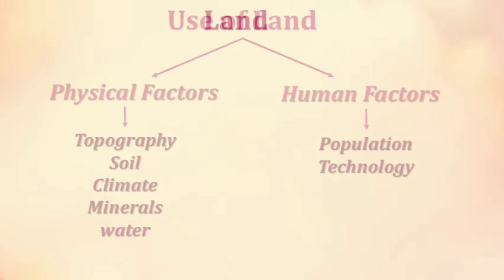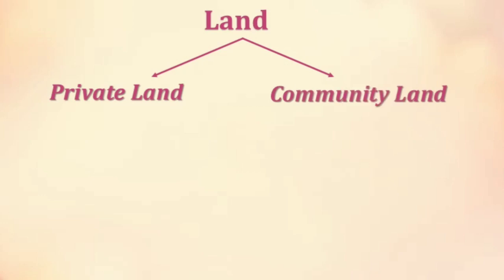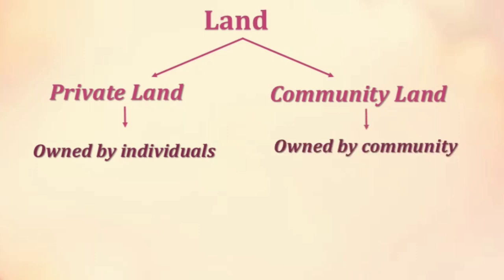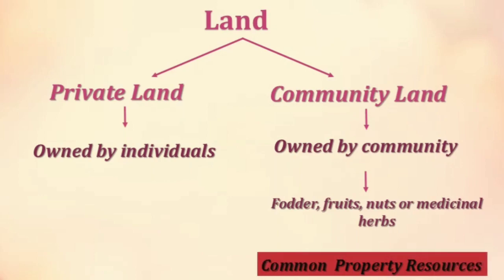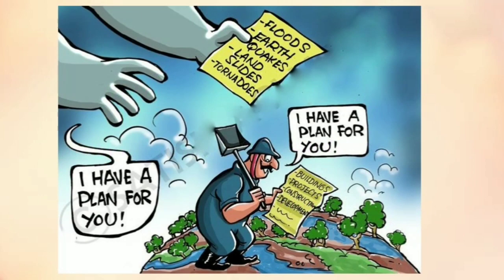Land can also be divided on the basis of private land and community land. Private land is owned by individuals, whereas community land is owned by the community for common uses like collection of fodder, fruits, nuts or medicinal herbs. These community lands are also called common property resources. People and their demands are ever growing, but the availability of land is limited. The quality of land also differs from place to place.